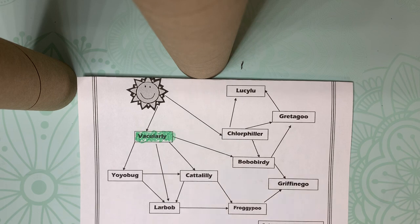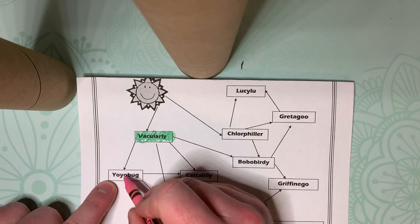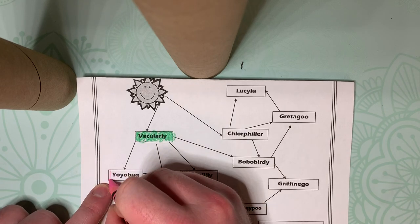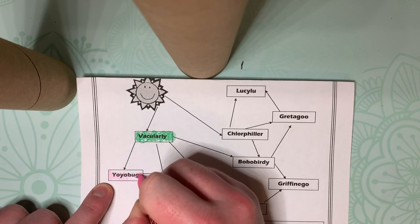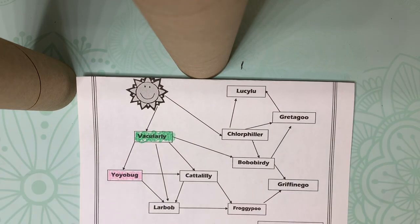Our herbivores are pink. So, let me pull out a pink here. Herbivores eat only plants. So, it looks like the yo-yo bug. The only thing that it eats is the vaculary. So, it would be an herbivore.